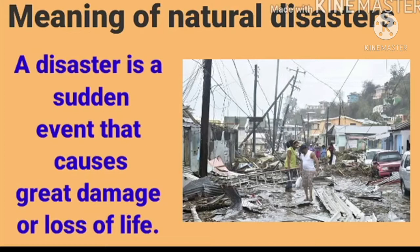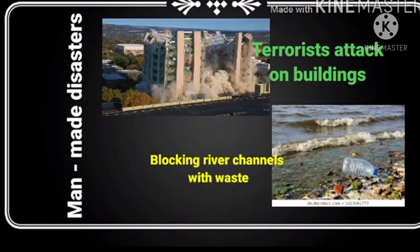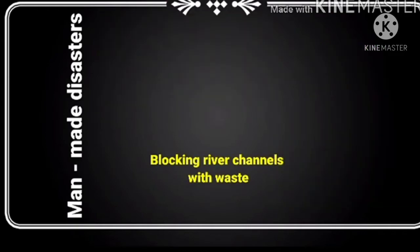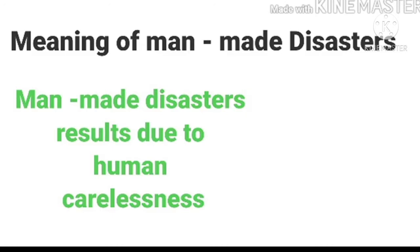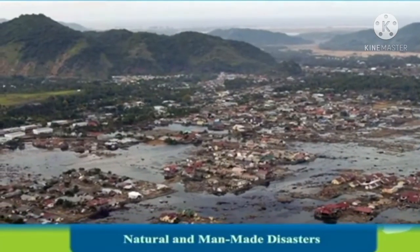What are natural disasters? A disaster is a sudden event that causes great damage or loss of life. Now, man-made disasters — the first image is that of a terrorist attack on a building and then the blocking of river channels. Man-made disasters result due to human carelessness. Yes, it happens due to human carelessness.